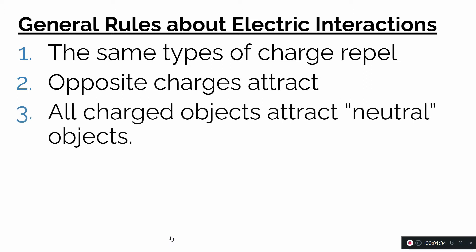Number three: both charged objects — in our case the top tape and the bottom tape — should have attracted all of the uncharged or neutral objects. The two neutral or uncharged objects we had were the paper and the foil, and each of those things should have been attracted to either the top tape or the bottom tape.